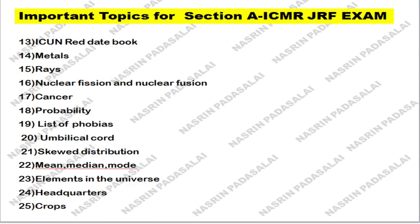You should know updated information about all those things. Next, know about probability. Next, know about the list of phobias — like fear of vomiting, fear of watching movies. Next, know about the umbilical cord. Next, know about skewed distribution — mean, median, mode formula.